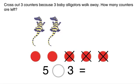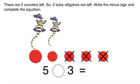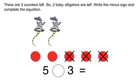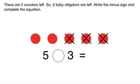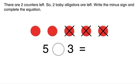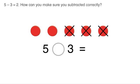How many counters are left? There are two counters left, so two baby alligators are left. Write the minus sign and complete the equation. Five minus three equals two.